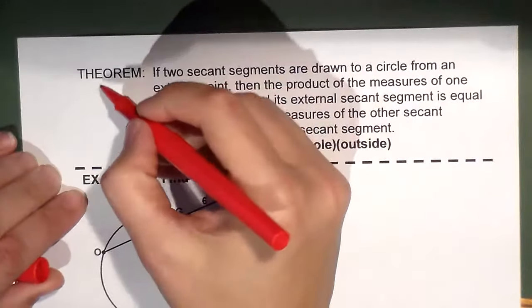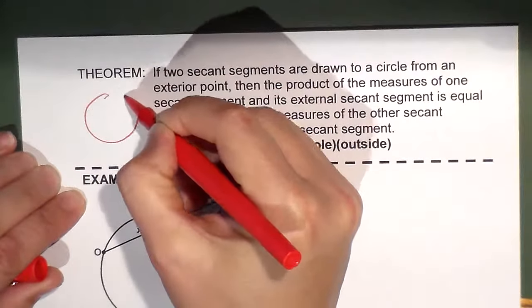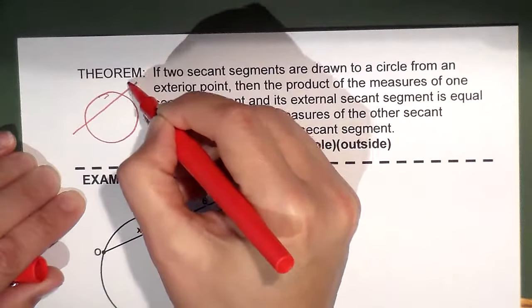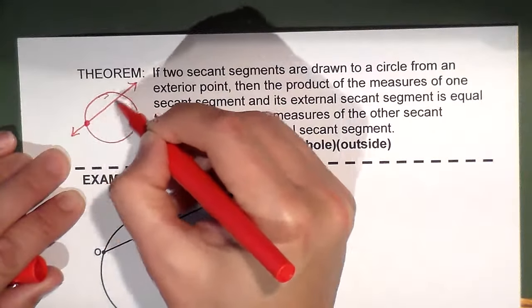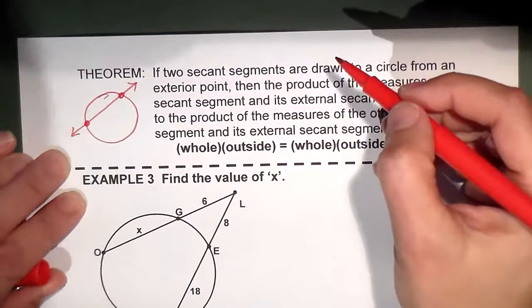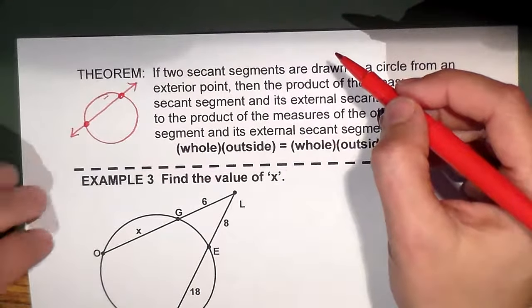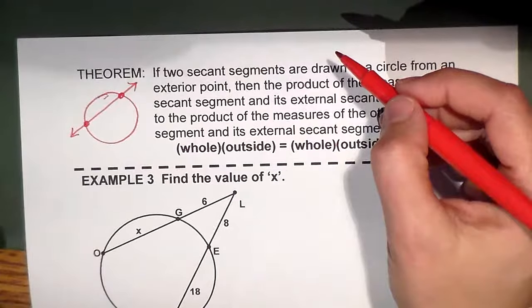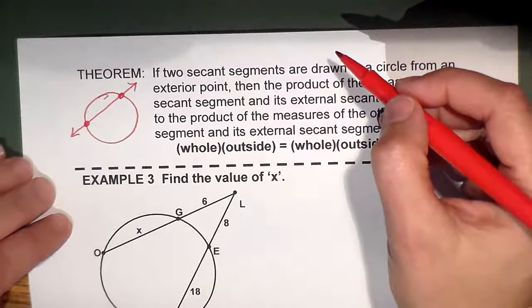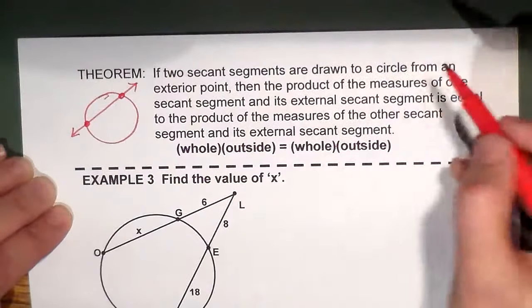If you remember, a secant is a line or segment or ray that passes through a circle. Remember the tangent intersects the circle at one point. The chord is actually a segment inside the circle, and the secant goes all the way through the circle.